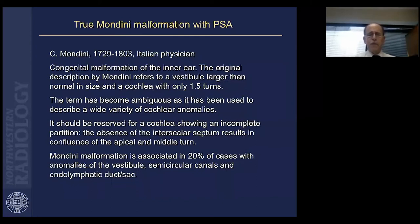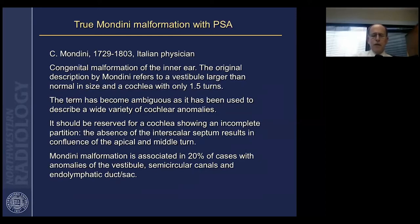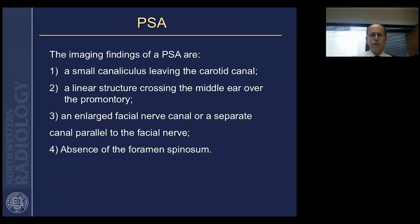Mondini originally described a very specific anomaly: a vestibule larger than normal and a cochlea with only one and a half turns. Over time the term has been used more broadly and ambiguously to describe a wider variety of cochlear anomalies. It should really be reserved for a cochlea showing an incomplete partition — the absence of the interscalar septum — resulting in confluence of the apical and middle turns. Mondini malformation is associated in 20% of cases with anomalies of the vestibule, semicircular canals, and the endolymphatic duct and sac. In this case, a primitive stapedial artery traverses through the stapes.